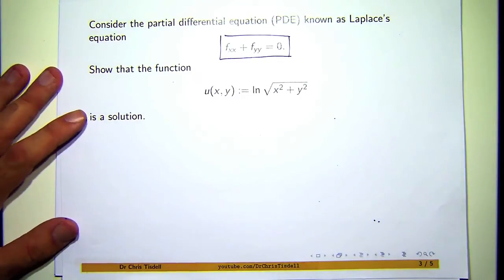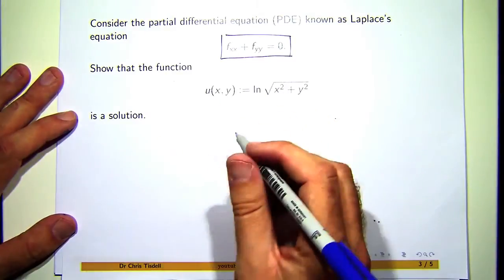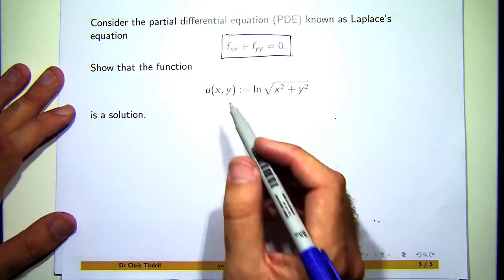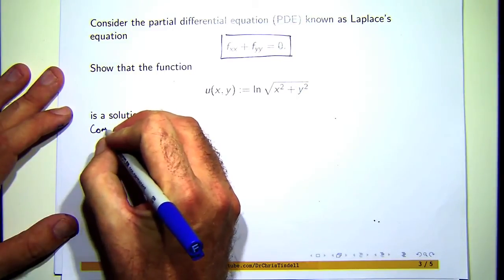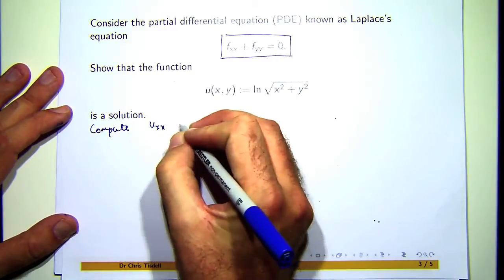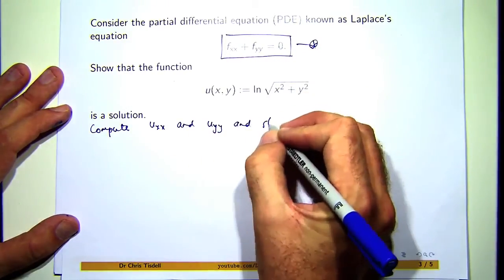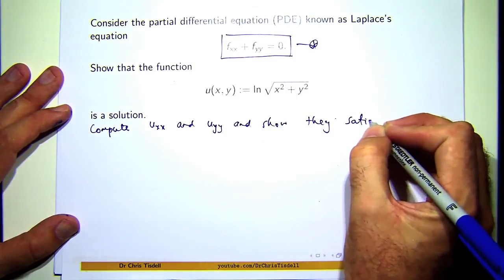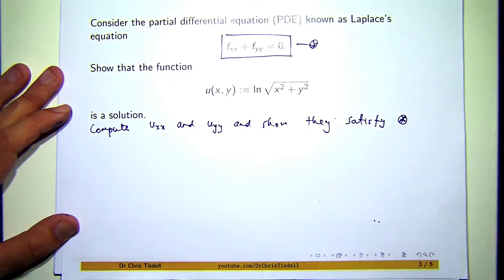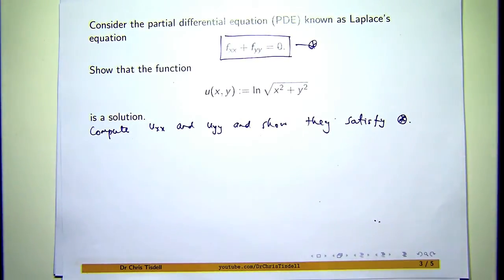So, I'm going to do the following. Let's compute u_xx and u_yy and show they satisfy star. That's like what we're thinking about when we're doing this problem. So, how do we actually compute the derivatives? Well, you could use the chain rule here, but some people are more comfortable just with writing it down. The quick way of doing this problem would be the following.